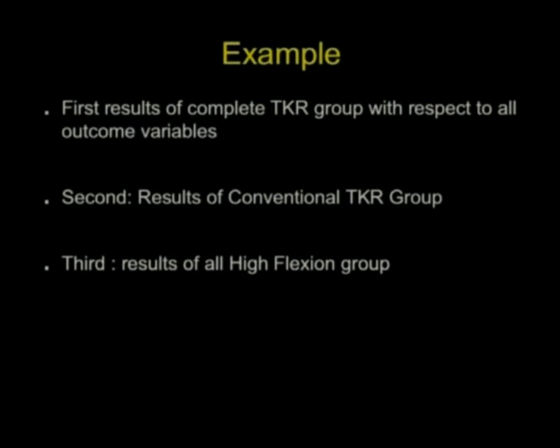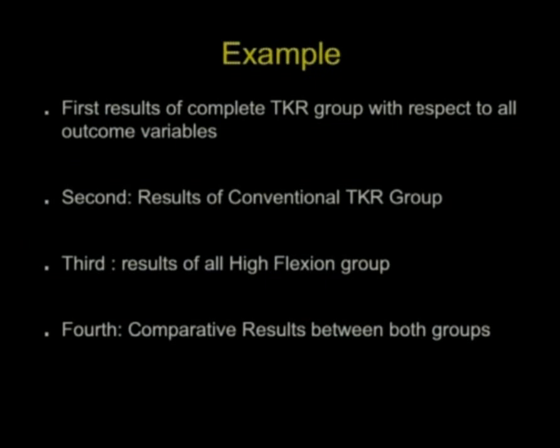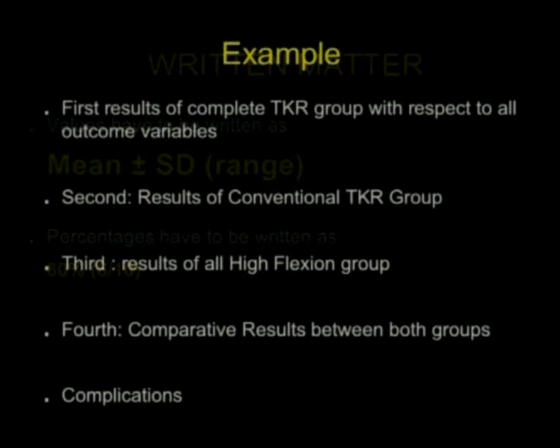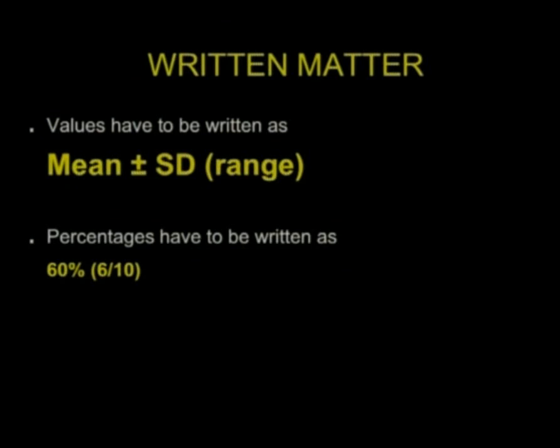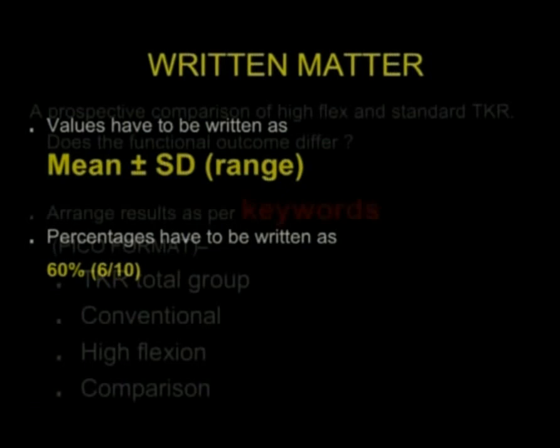First result is about the complete TKR group. Second is about the conventional TKR. Third is about the high flexion. And the last one is about the comparative result. Organize your results also in the same format. Lastly, add complications. Always add complications to your results. When writing your results, mention mean plus standard deviation and range always. You can replace range with confidence intervals. But for your thesis, range is good enough. Whenever you're writing percentage, write in this format. Mention the actual numbers also. Don't write just percentages. You need to organize as per your keywords.